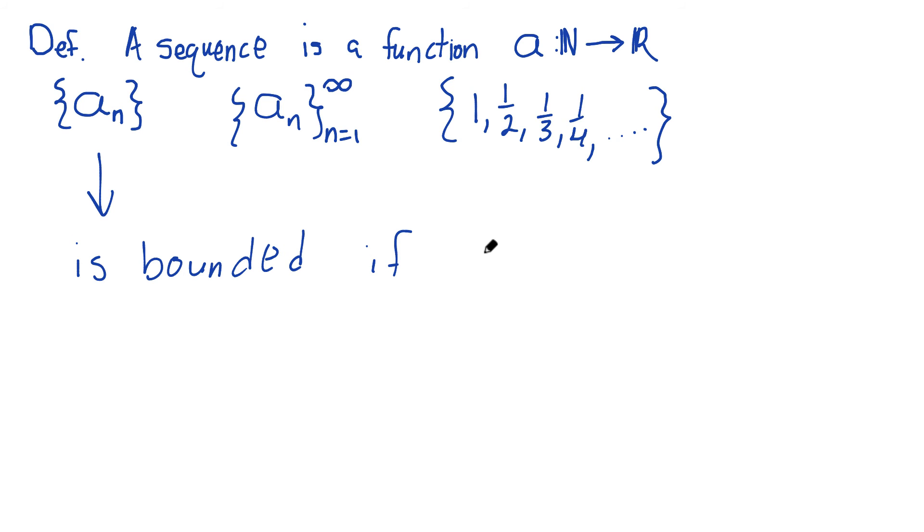We could say a sequence a sub n is bounded if there's a real number, call it b, a real number in R, such that the absolute value of a sub n is less than or equal to b for all n in the natural numbers. So basically, for any term of the sequence, its absolute value is less than b.